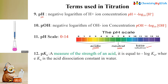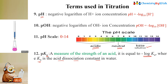The next term is pKa, where A stands for acid. It is used to measure the strength of an acid — whether your acid is strong or weak. It is equal to −log Ka, where Ka is the acid dissociation constant in water. So pKa is used to measure the strength of an acid.